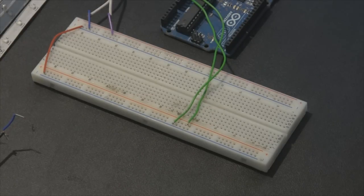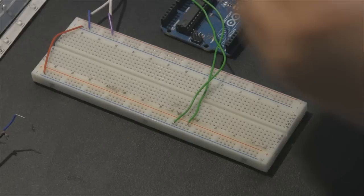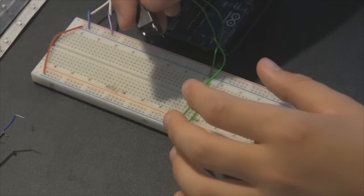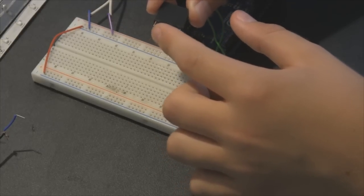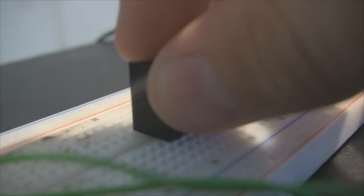So here comes the fun part. Now we get to do the breadboard design of the relay circuit. Just take your relay like so and plug it in at around the center of the board with the two pins on this side going to the left. Just like that.